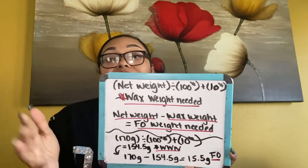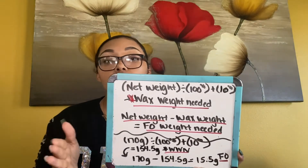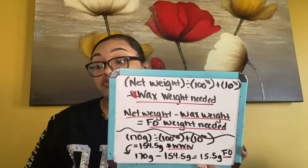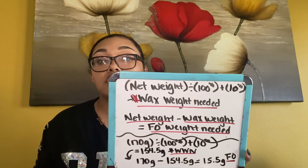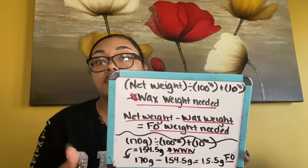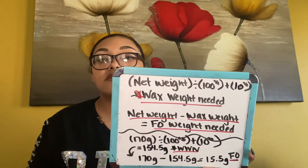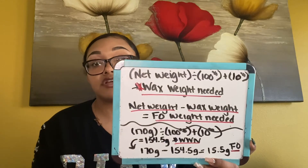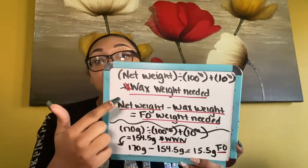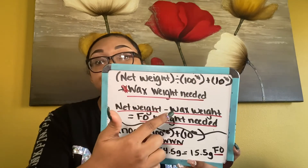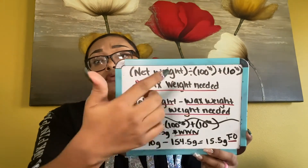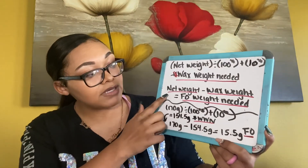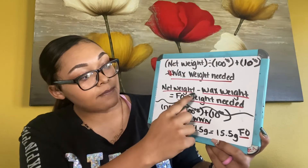Even though your vessel holds six ounces, you can't just measure out six ounces of wax, because you also have to factor in your fragrance oil. You need to leave a little room for it. Once you do this math, that gives you the wax needed for the candle you're making.